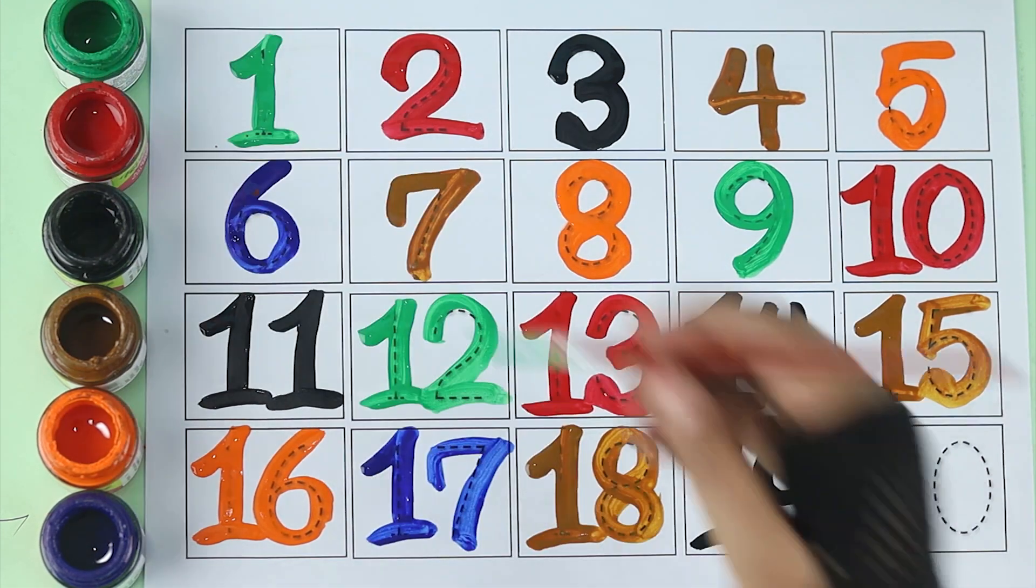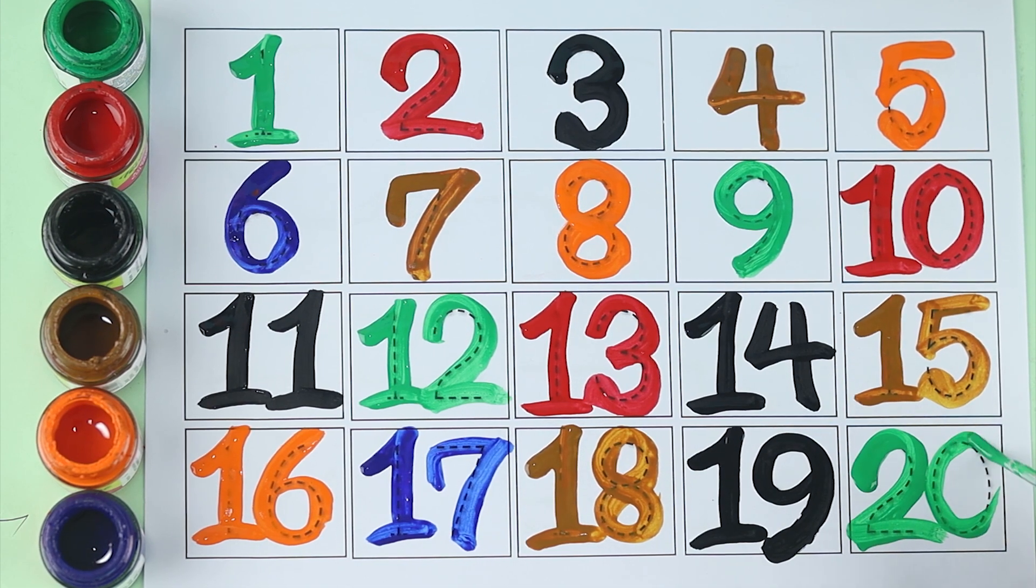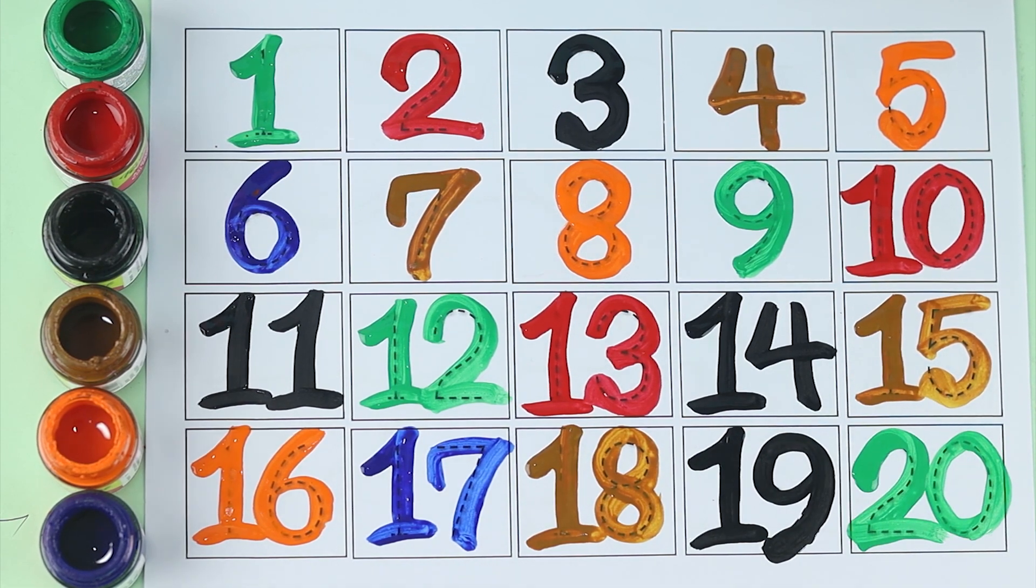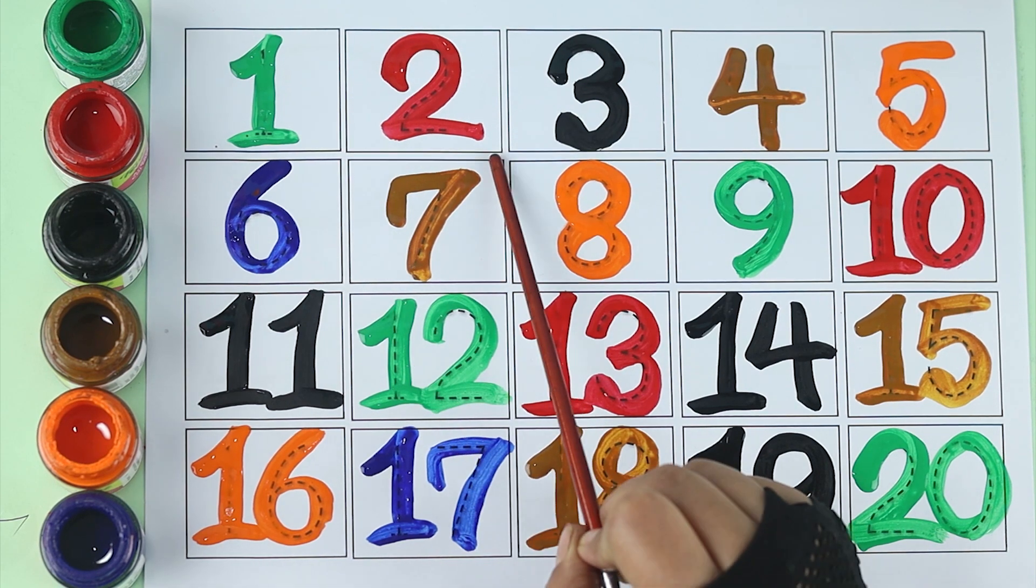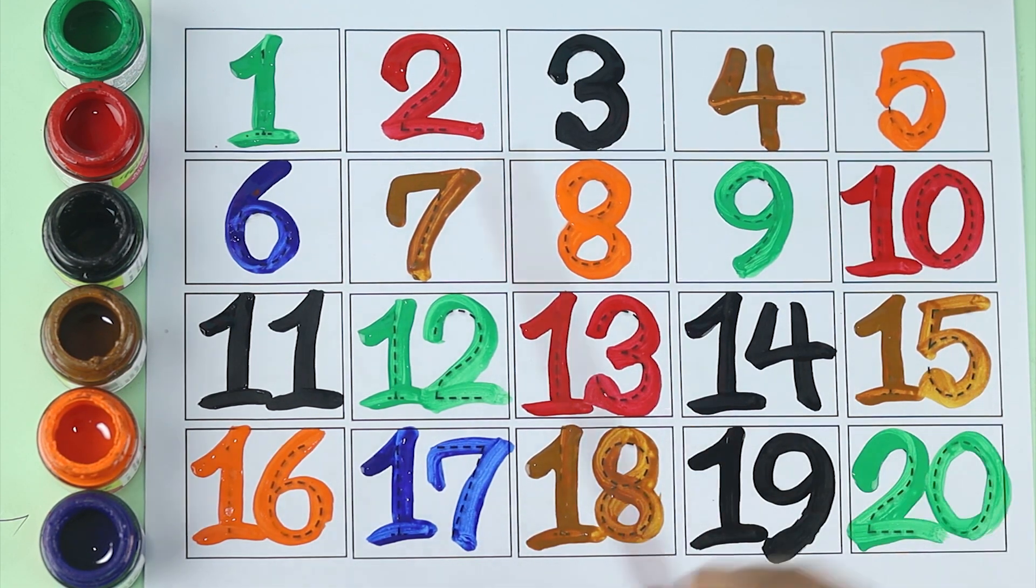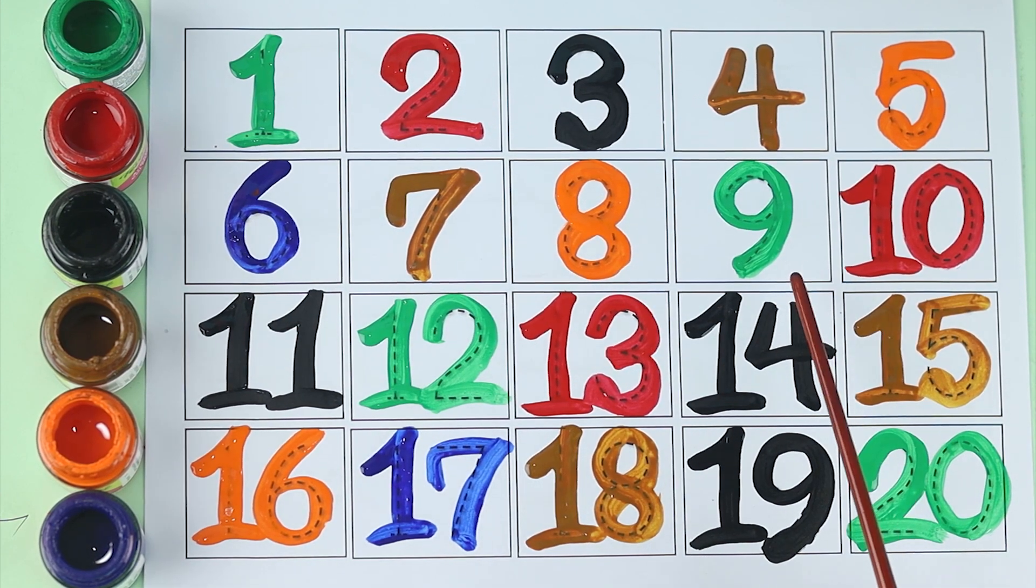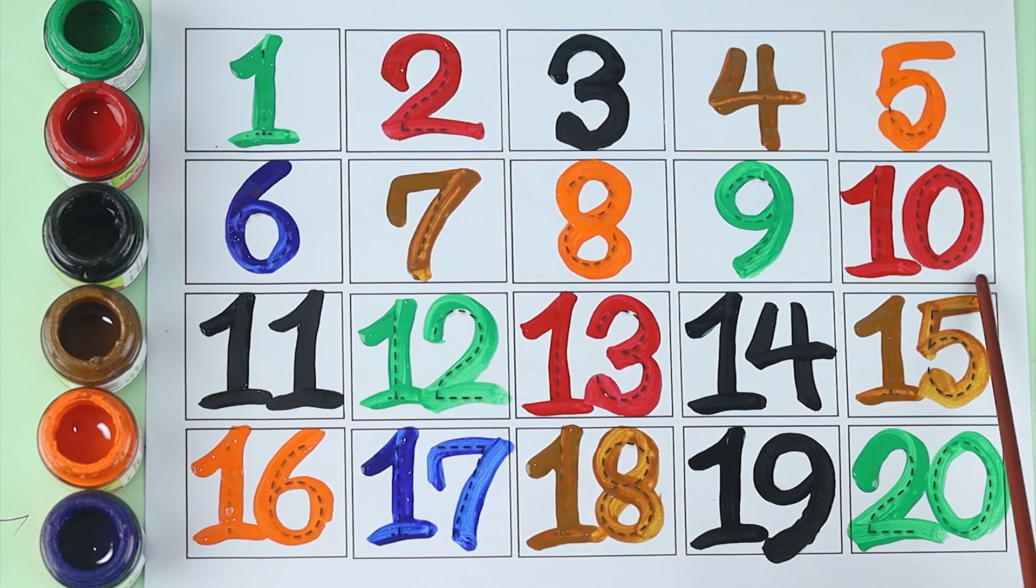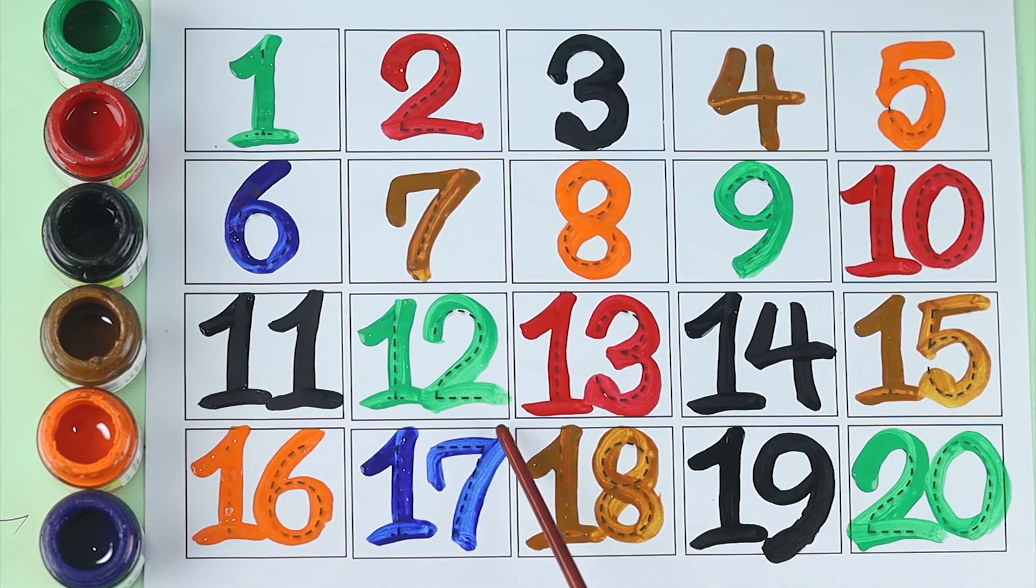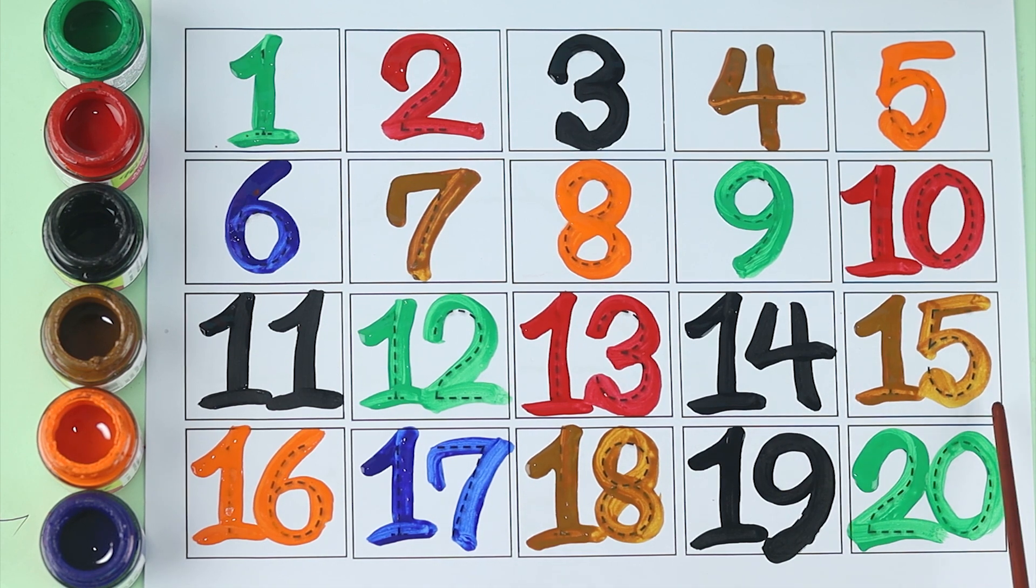Green color twenty. One, two, three, four, five, six, seven, eight, nine, ten, eleven, twelve, thirteen, fourteen, fifteen.